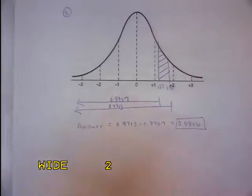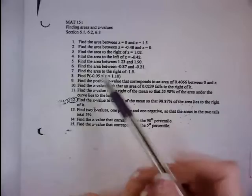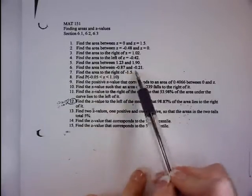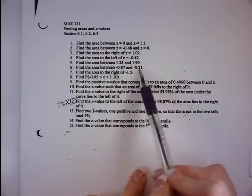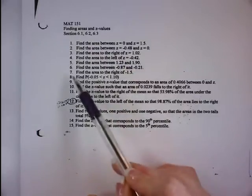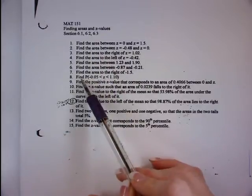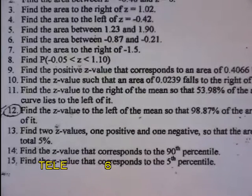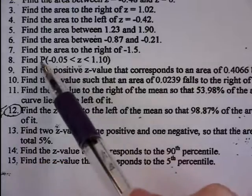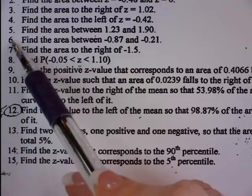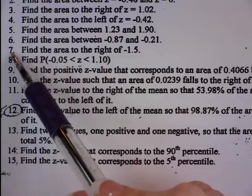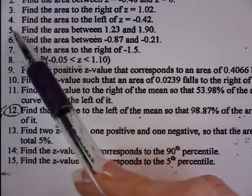I'm going to jump over questions 6 and 7. Question 6 is very similar to question 5 except both Z-scores are negative — both below the mean of zero. Question 7 is very similar to question 3. I'll leave those for you to do on your own and jump to question 8, just because of the notation — this is probability notation.